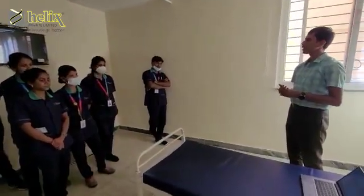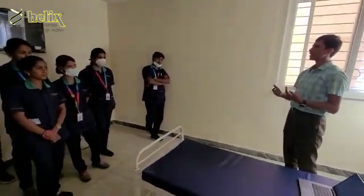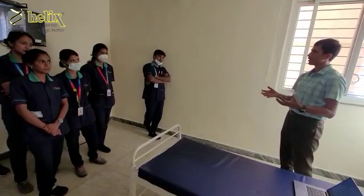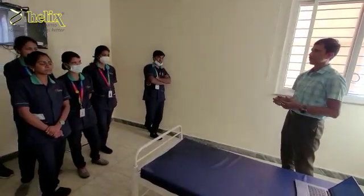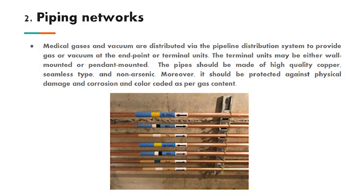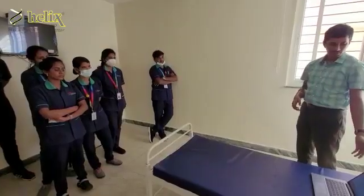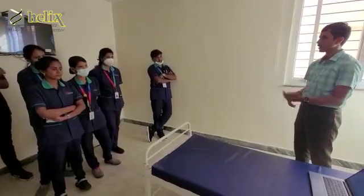Next comes carbon dioxide. Carbon dioxide is used as an insufflation agent — that means to expand the size of an organ — so that it will be easier for doctors to perform surgeries. Because the size of the organs are very small, it is difficult to reach all areas, so they expand using carbon dioxide. It is color coded with gray.